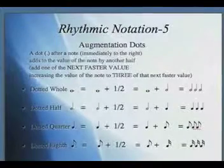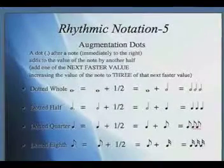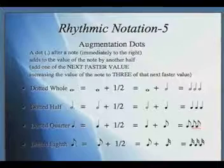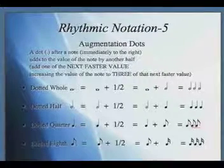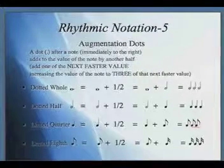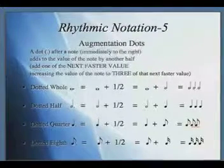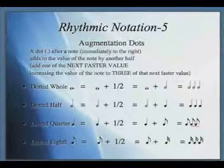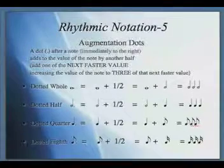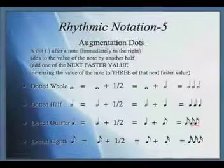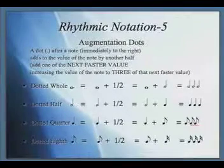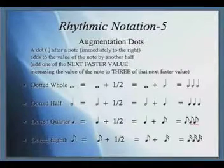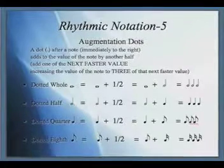The augmentation dot is sometimes a difficult principle for people to grasp, but it's not too hard if you just know your divisions and can go to the next faster value. Whenever there's a dot after a note, it adds one of that next faster value, which happens to be half.